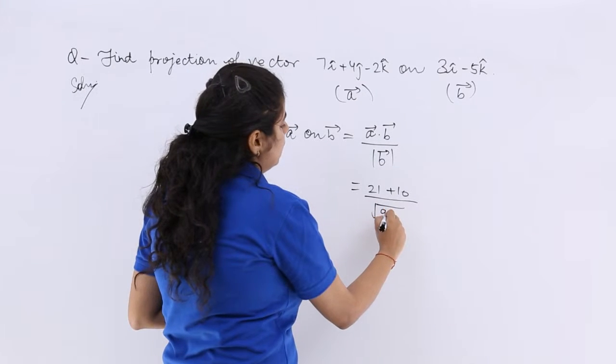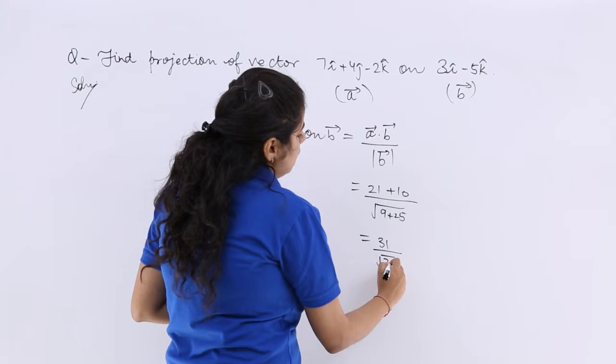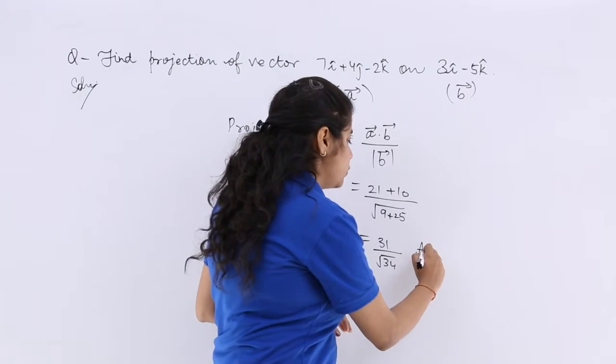So it is under root 9 plus 25. So it is 31 over root 34. And that is the answer to the projection.